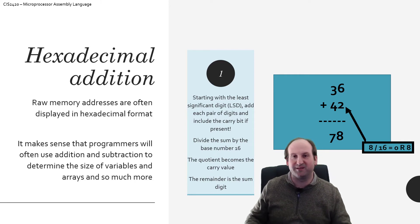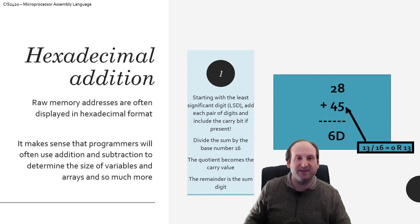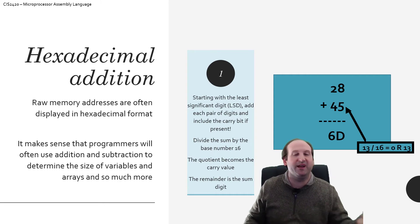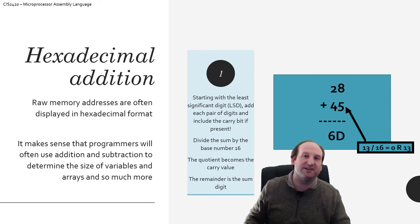A slightly more complicated addition: 8 plus 5 gets me 13. If this were base 10, I'd throw a 3 down and carry the 1. But in this case, 13 is one of the digits I'm allowed to have — 13 converts to D. So D goes down below and there's still no carry. Then the second addition is 2 plus 4, which is 6. So 6D is the result of this problem.